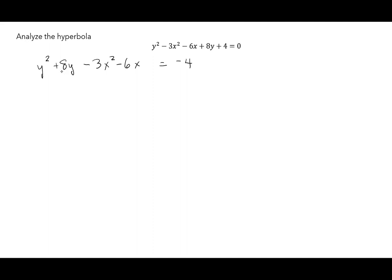With the y's it looks good, so I'll throw parentheses around y² + 8y. For the x² term, it has a coefficient of -3, and we're going to complete the square for both. When you factor out that -3, pay attention to how it flips the sign on -6x — negative 6 divided by negative 3 is positive 2. So that becomes +2x inside the parentheses.